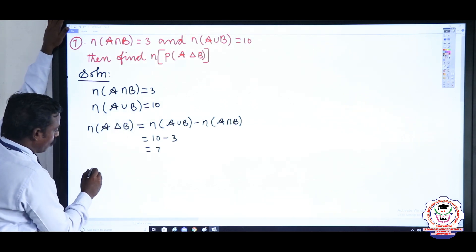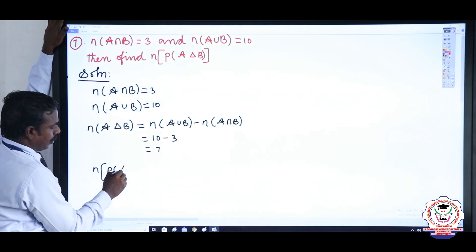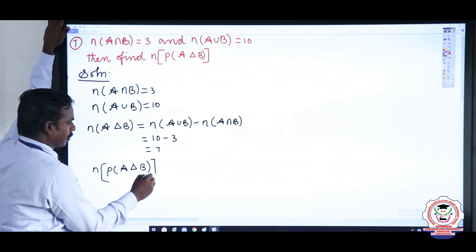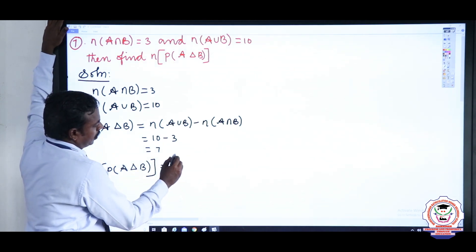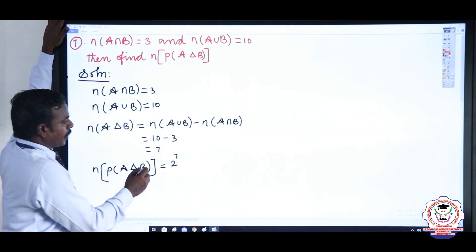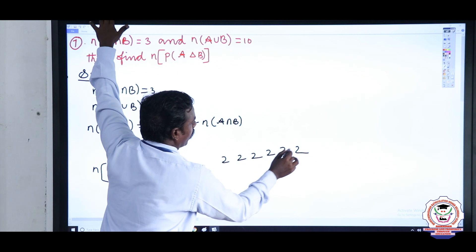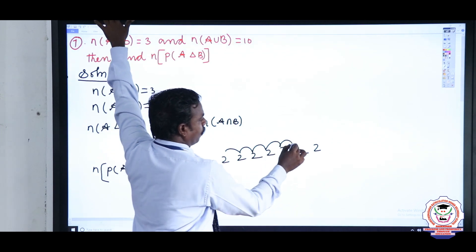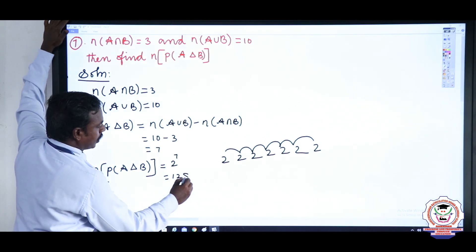They are asking for the power value, n(P(A △ B)). Since n(A △ B) = 7, we need 2 to the power 7. Multiplying 2 seven times: 2, 4, 8, 16, 32, 64, 128. So n(P(A △ B)) = 128.